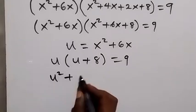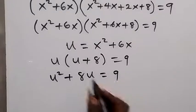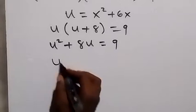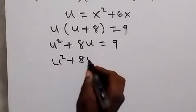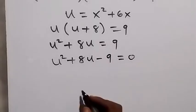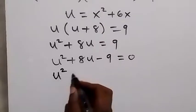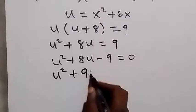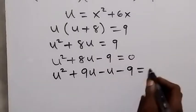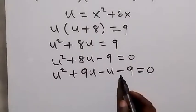Then we use u to open the bracket, and this becomes u squared plus 8u equals 9. We take this 9 to the other side to form a quadratic equation, and this will become u squared plus 8u minus 9 equals 0.